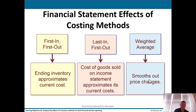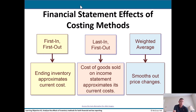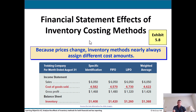Financial statement effects of the costing methods: with FIFO, ending inventory approximates current cost because you're selling the earliest-purchased units. With LIFO, cost of goods sold on the income statement approximates current costs. Weighted average smooths out price changes. Looking at specific identification versus FIFO versus LIFO versus weighted average, you can see differences in cost of goods sold — not massively different, but they do differ, affecting cost of goods sold, net income, and ending inventory valuations on the balance sheet.